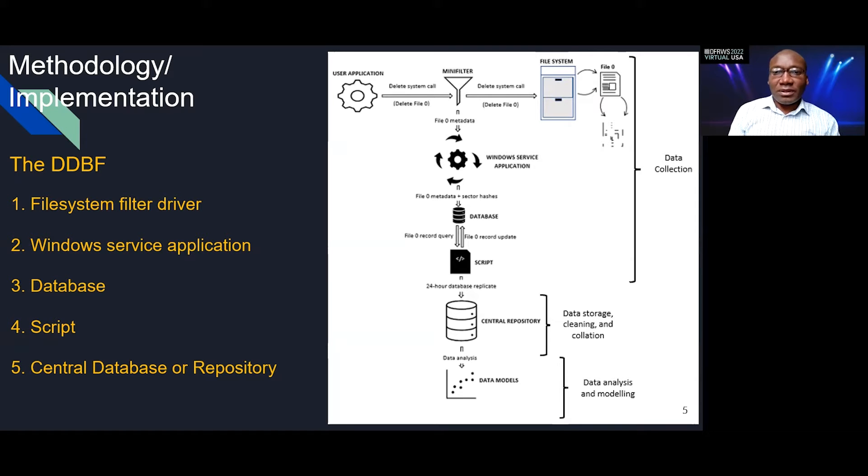The methodology that we applied is that typically user applications will make a request to the file system to delete files using a delete system call. What we did is to place a mini filter or a file system filter driver in the middle of that communication so that when the system call moves from the user application, we intercept the call before it gets to the file system. We need to do that because once the call gets to the file system and the file is deleted, the chances of getting the file information is heavily reduced. So we intercept the call, and then we extract the information about the file, that is file metadata, things like the name of the file, the full file path, the number of sectors, and the addresses of the sectors.